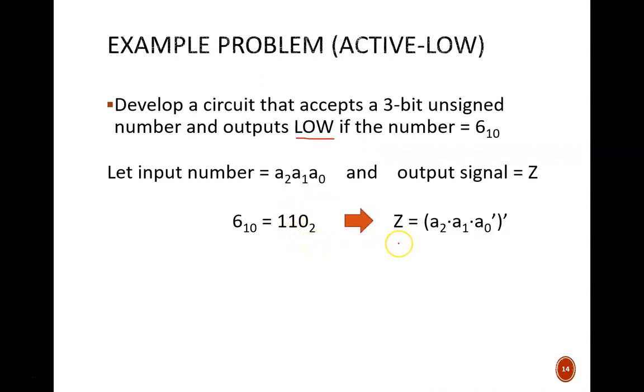Next, we use the same minterm in the equation and simply complement the whole term. The parentheses are important here. This leads to a circuit just like what we saw before, but with the complement bubble at the end. So, instead of an AND gate, we have a NAND gate.